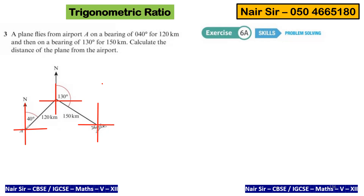I'm here, traveling at this distance, and reaching over here. Look at this angle — 40 degrees. Then once I reach over here, I'm going down over here. I'm being asked to find this distance. It forms a triangle.